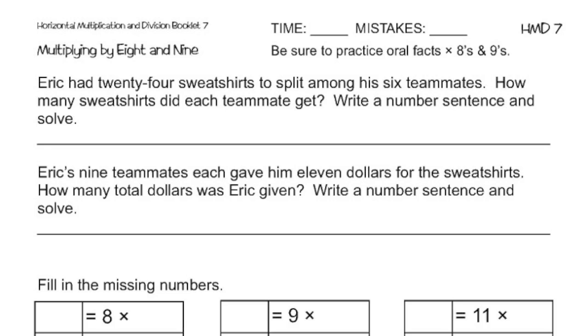Even though this is multiplying by 8 and 9, dividing is involved as well. This is something you should be able to handle. 24 divided by 6, because there are 6 teammates, equals 4. So there should be 4 sweatshirts per teammate.